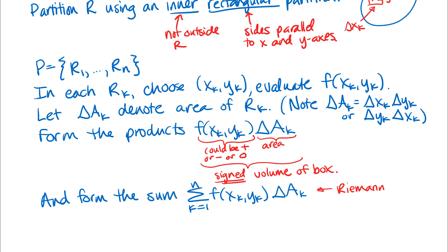We want infinitely many little boxes that are infinitely small so they fill up the whole region R. In calculus 1 you let the widths approach zero and the number approach infinity. You have to be careful not to just let n approach infinity — you could draw infinitely many small boxes in one area while leaving big boxes elsewhere. You need the boxes to also get infinitely small.